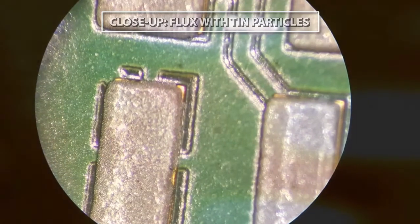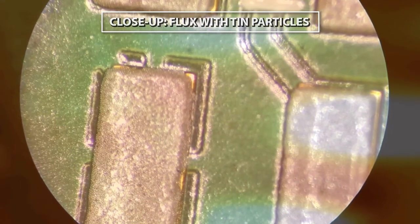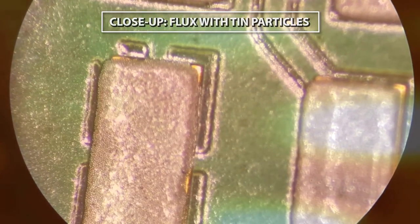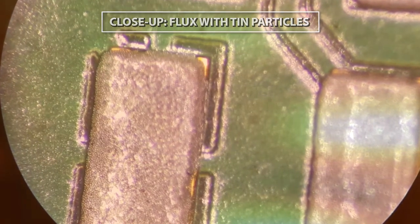During the thermal soak, the flux is activated to reduce oxidization of pads and leads of components and improve solder wetting. In the third section, the solder paste melts or reflows and the process reaches its maximum temperature.